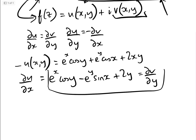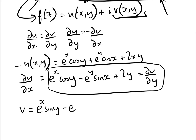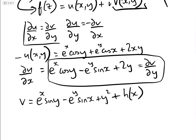We can integrate this with respect to y to get v. Therefore, v equals e to the x sin y minus e to the y sin x plus y squared plus some function h of x, since we are integrating with respect to y. That uses the first of the Cauchy-Riemann equations.